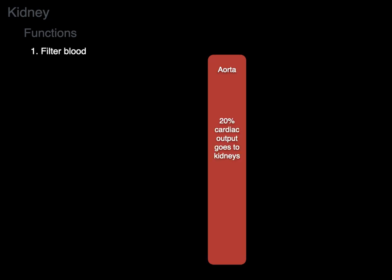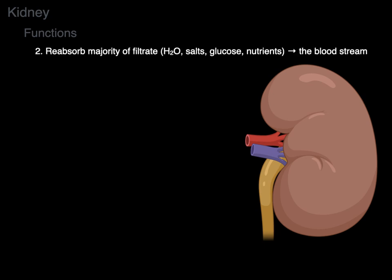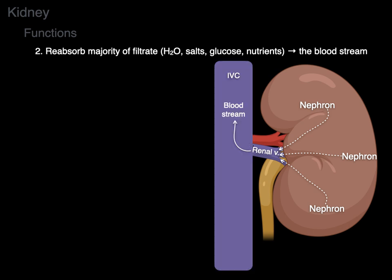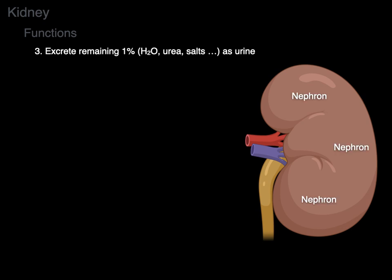The kidney filters blood. 20% of all the cardiac output goes to the kidneys via the renal artery, which distributes blood through different branches. Structures called nephrons filter the blood. The kidneys then reabsorb the majority of that filtrate — the water, salts, glucose, and nutrients — right back into the bloodstream via the renal veins into the inferior vena cava. The kidneys excrete the remaining 1% of water, urea, and salts as urine secreted at the ureter.